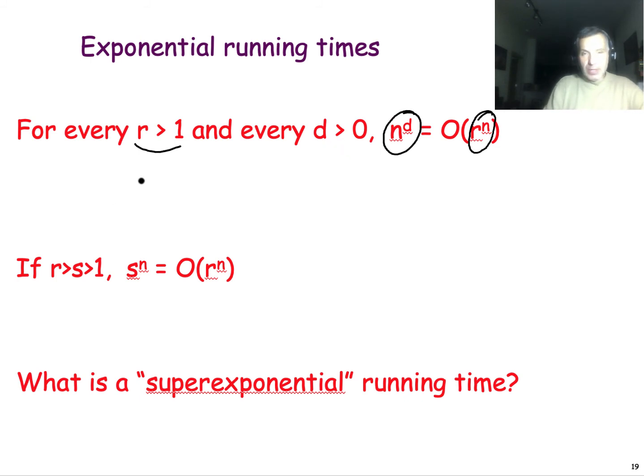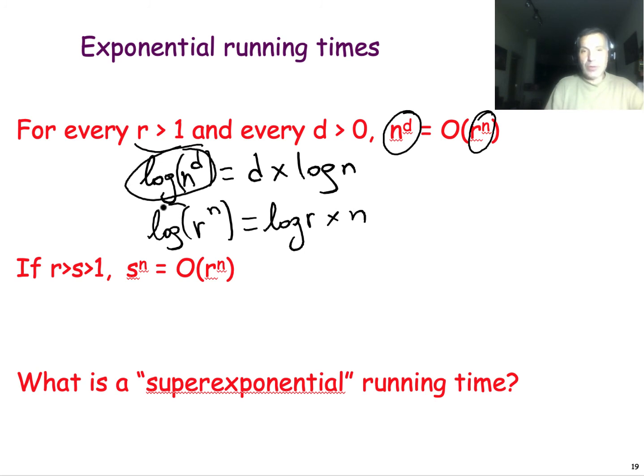Imagine that we take the logarithm of both of these functions. This is d times the logarithm of n. If I take the logarithm of r^n, this is the logarithm of r times n. This function increases more slowly than this function because the logarithm increases more slowly than the linear function. And so the function that is polynomial here increases more slowly than this exponential function.